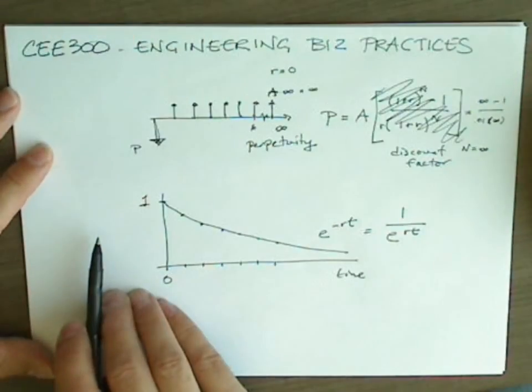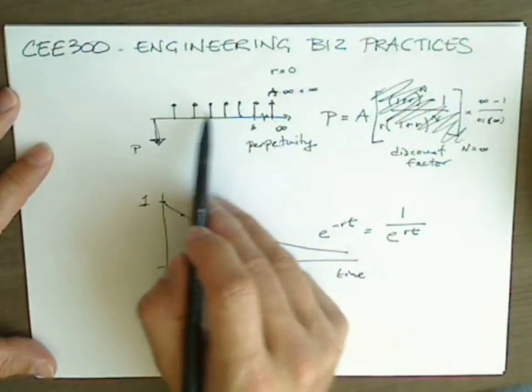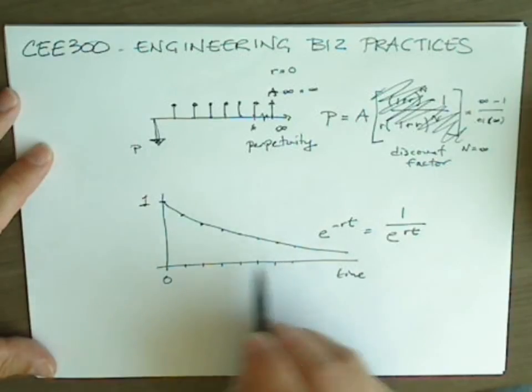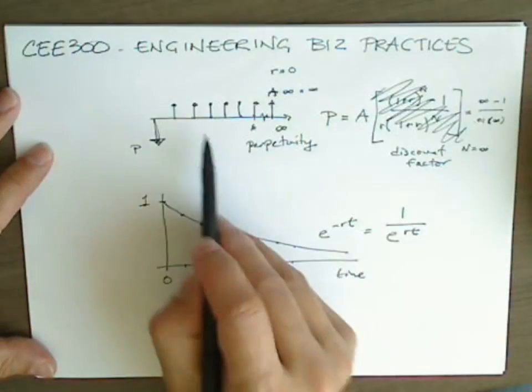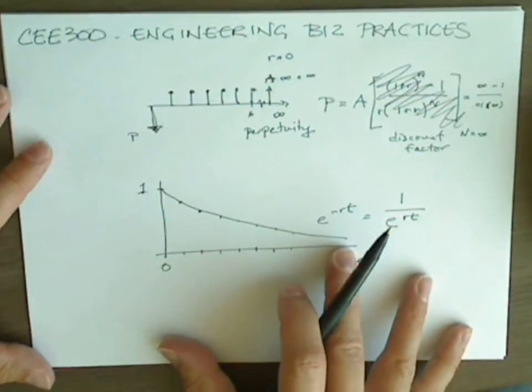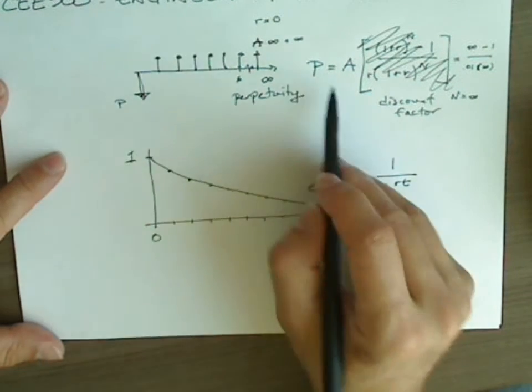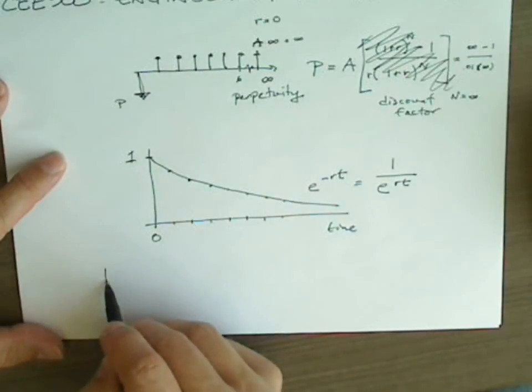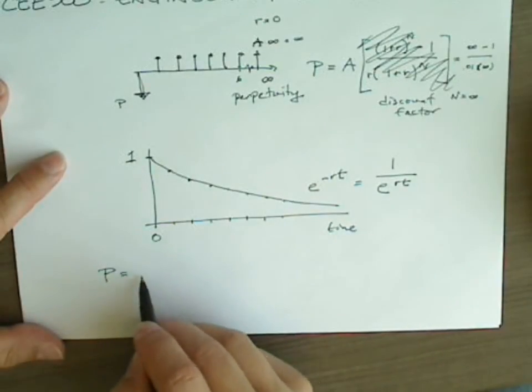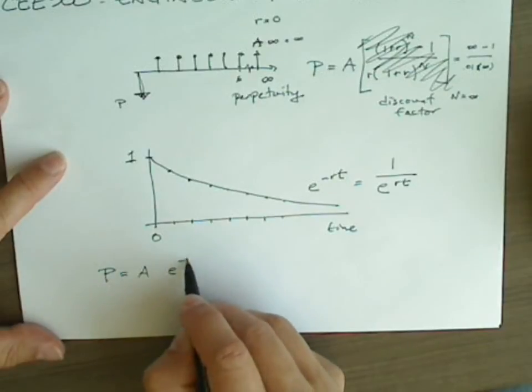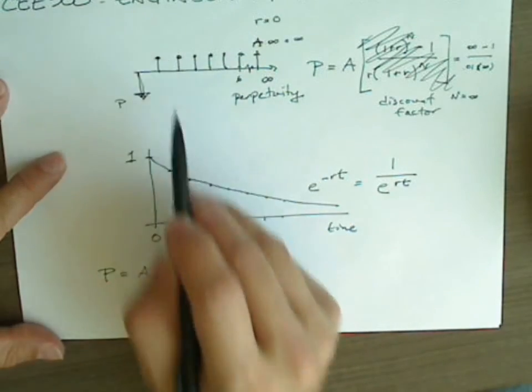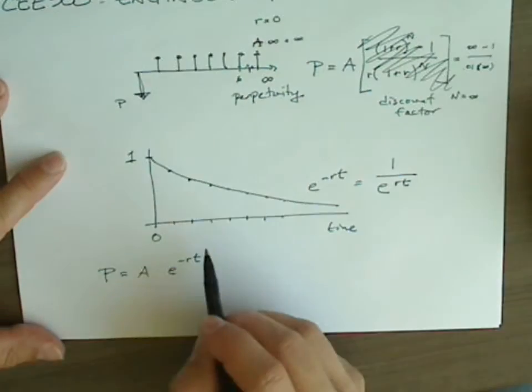The question we need to answer is, how do we multiply all of these payments by all of these times? Seeing as it's infinite, we can't get our calculator out and keep working this and working this. We know that this asymptotically approaches 0, and so the net present value of these payments must asymptotically approach some value, because P equals A times whatever the correct expression of the discount factor is. Well, here's our expression of the discount factor. So we have P equals A times e to the negative RT. And this holds for any single one of these payments.